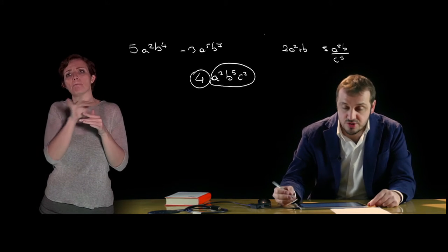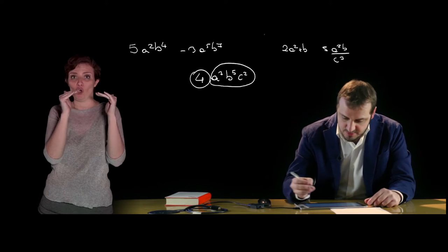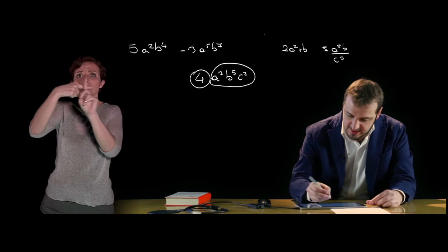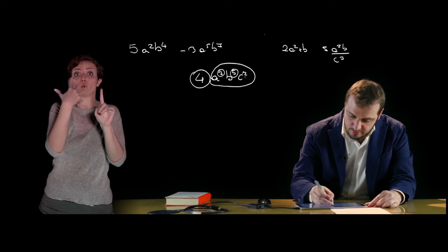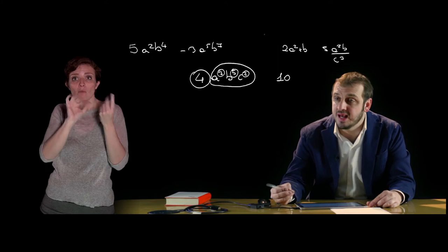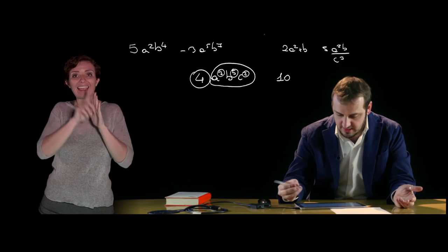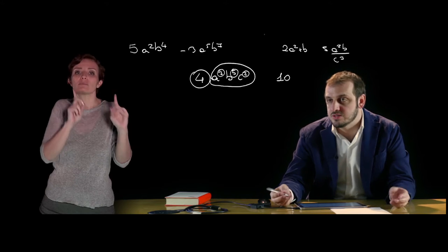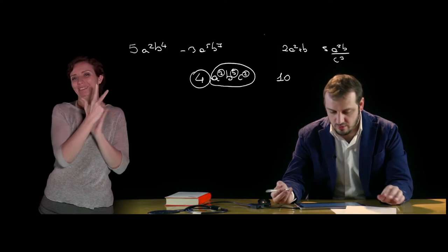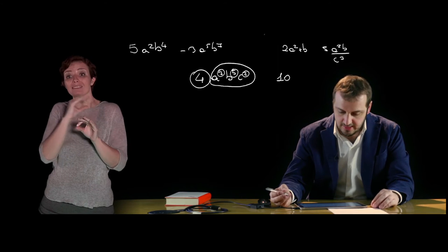In questo esempio possiamo anche vedere quello che è il grado di un monomio, che è la somma di tutti gli esponenti delle varie lettere. Quindi in questo caso questo monomio sarà di grado 3 più 5 più 2, quindi il grado di questo monomio è pari a 10. È possibile anche definire il grado del monomio rispetto alla singola lettera: rispetto alla lettera a sarà 3, b sarà 5, e infine 2 rispetto alla lettera c.